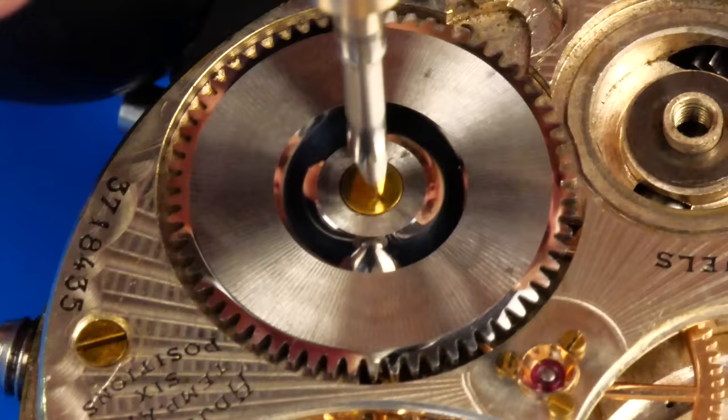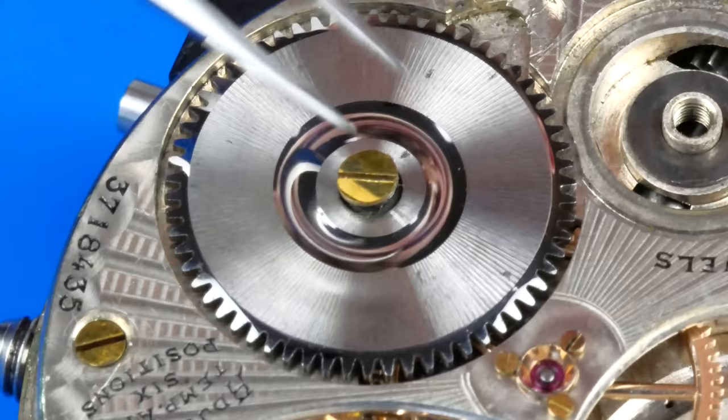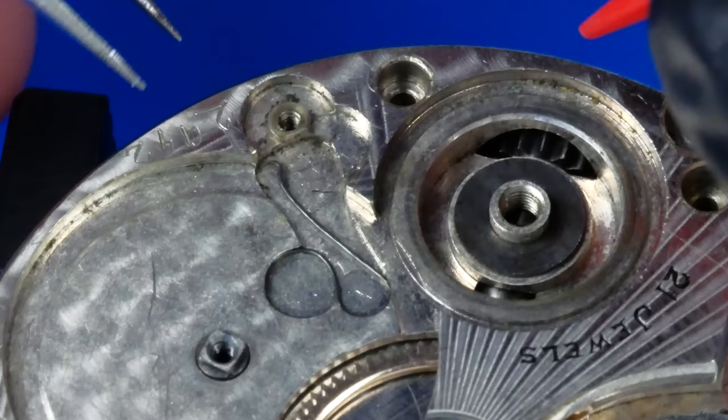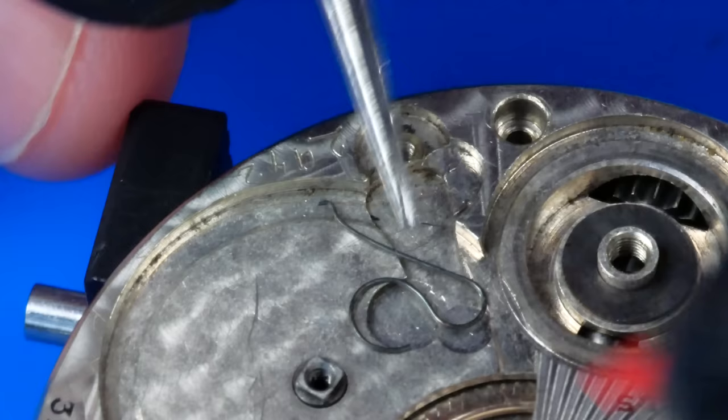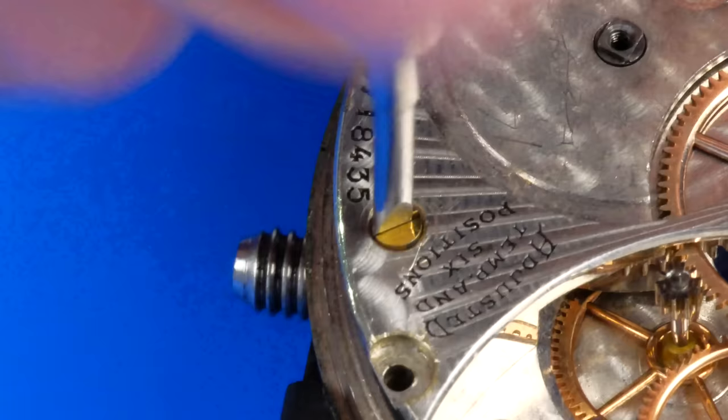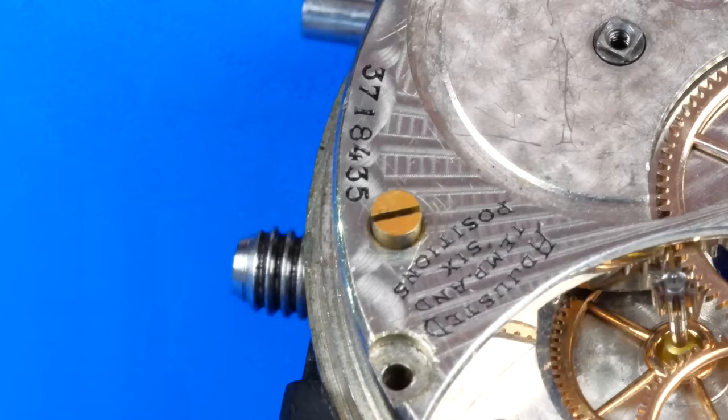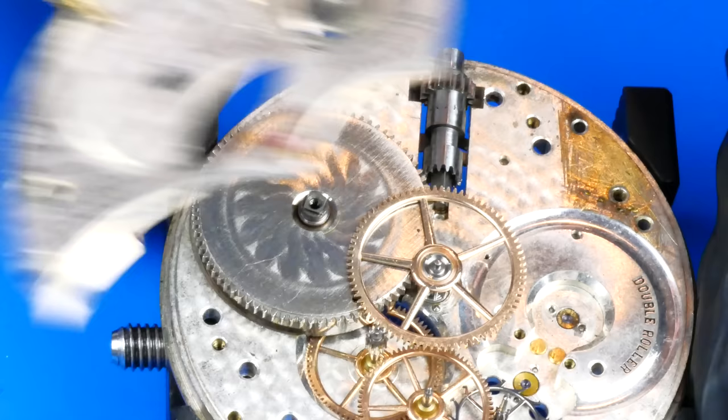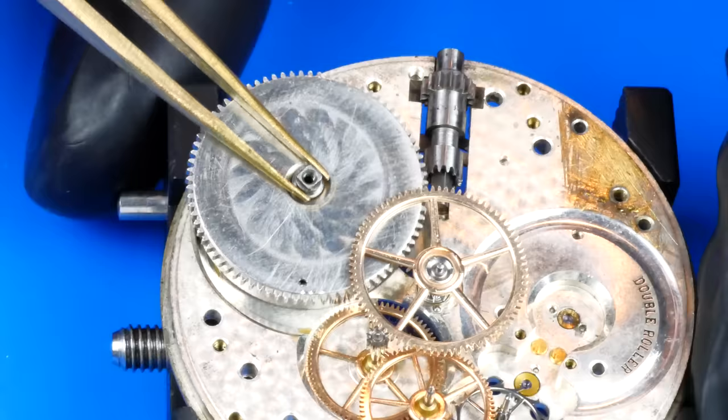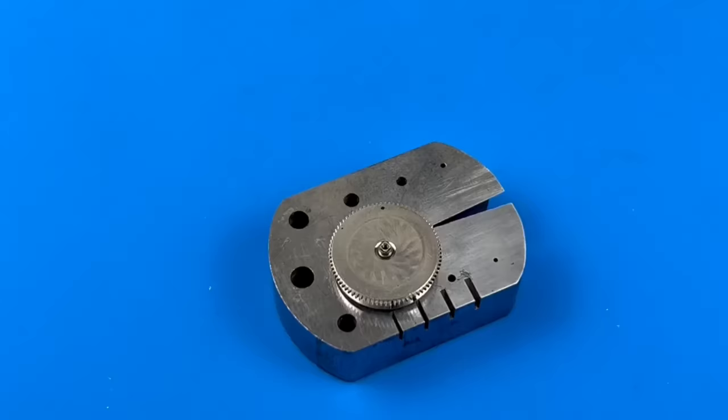The click is now removed. The crown wheel is lifted away. The ratchet wheel is uninstalled. The click spring is carefully convinced out of its slot. The barrel bridge is now removed. The mainspring barrel is uninstalled.